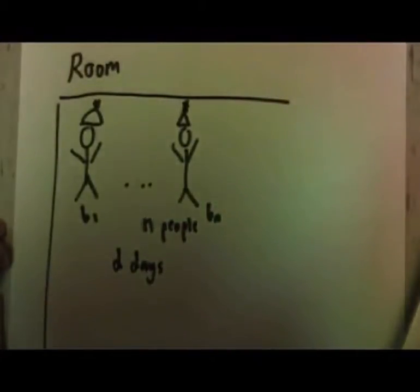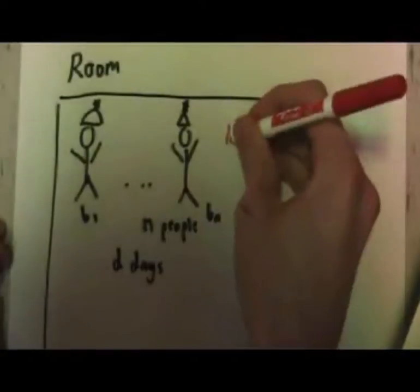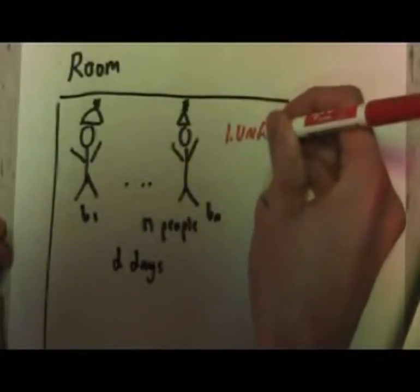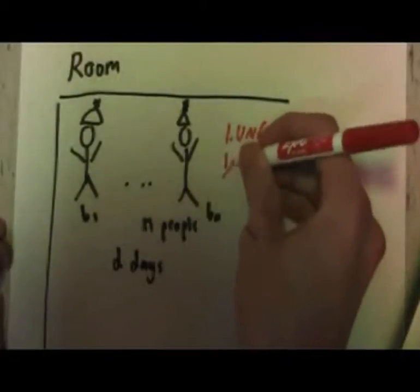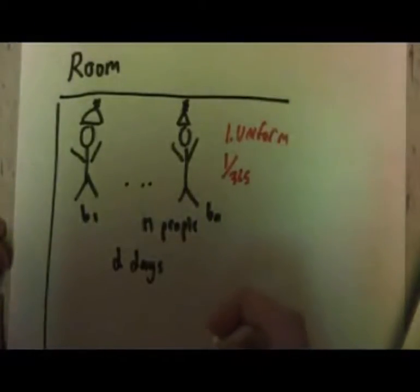We're going to make two assumptions about our birthdays. First, they're uniformly distributed throughout the year. This means that for a normal Earth year there's a 1 in 365 chance of a person having a birthday on a given day.